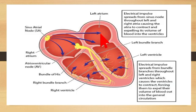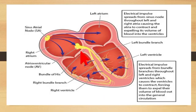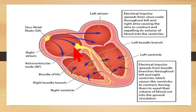The atria contract, pumping blood into the lower chambers of the heart — the right ventricle and the left ventricle. The electrical impulse then spreads to another area of specialized tissues located between the atria and the ventricles. These are called the atrioventricular node. You can see here the yellow color represents the atrioventricular node, which is present at the junction of the atria and ventricles.